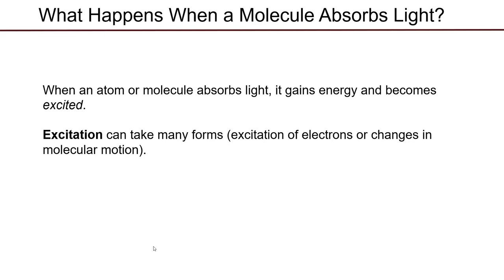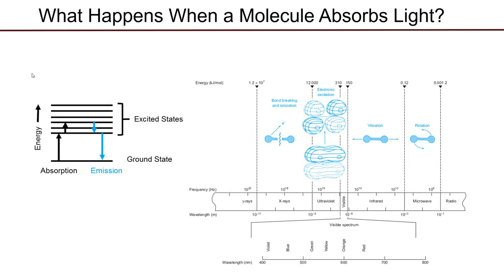What exactly happens to electrons when they interact with light depends on the energy of the light. Depending on the energy, excitations can take many forms: excitation of electrons, breaking of bonds, or changes in molecular motion. In this module, since we're talking about UV and visible light, we're focused on the wavelengths that cause electrons to be excited within the molecule. The general rule to remember is that the higher energy the light, the more destructive its interaction with the sample molecule is going to be.